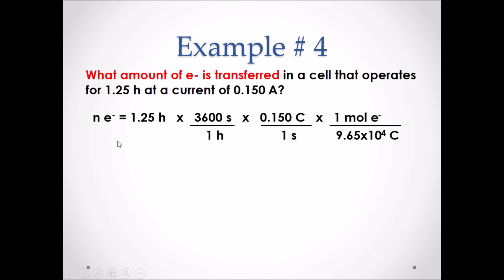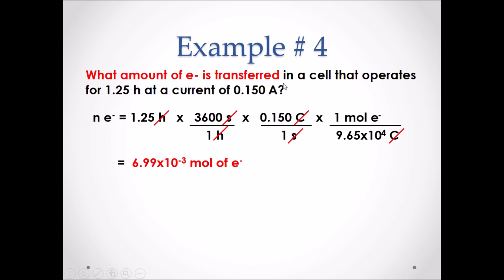To answer this example we will start with the 1.25 hours and convert to seconds by multiplying by 3600, which is the number of seconds in one hour. Our unit is now seconds. We then use the amps provided in the question — whose actual units are coulombs per second — to cancel out seconds, leaving our answer in coulombs. We then divide by Faraday's constant to convert to moles of electrons. The final answer is 6.99 × 10⁻³ moles of electrons transferred in the cell.